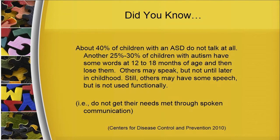About 40 percent of children with ASD do not talk at all. Another 25 to 30 percent of children with autism have some words by age 12 to 18 months and then, for unknown reasons, lose them. Others may speak, but not until later in childhood, and still others may have some speech but not be able to use it in a functional way — in other words, they can't get their needs met through spoken communication.